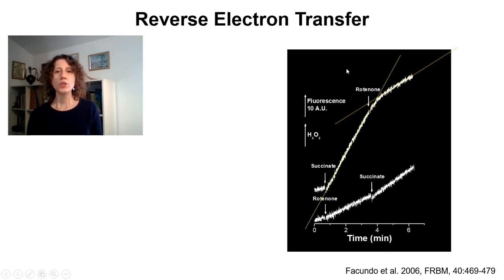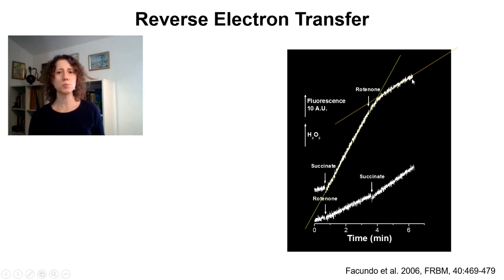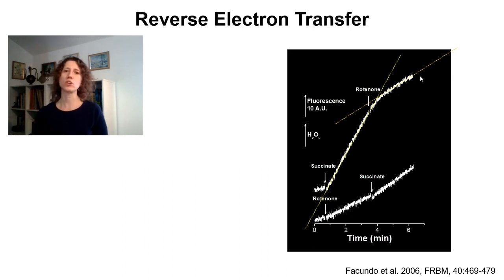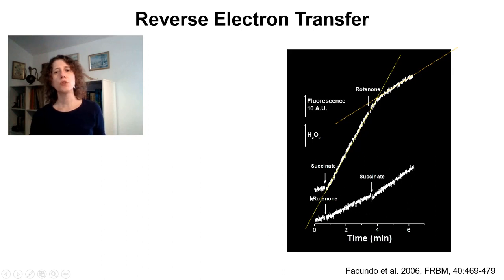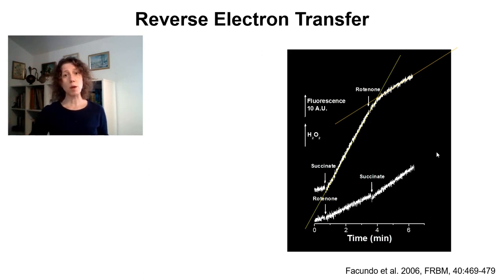As proof of concept: if you add rotenone before succinate, respiratory rates are exactly the same, but hydrogen peroxide production is low from the start because complex 1 was already inhibited. So reverse electron transfer is a very important source of electron leakage, particularly when membrane potentials are high, and particularly in tissues such as brain and heart.